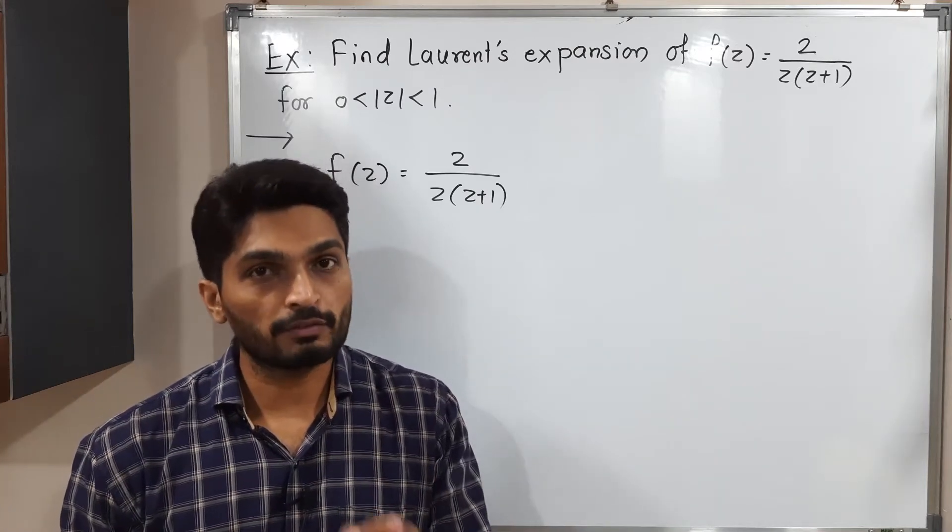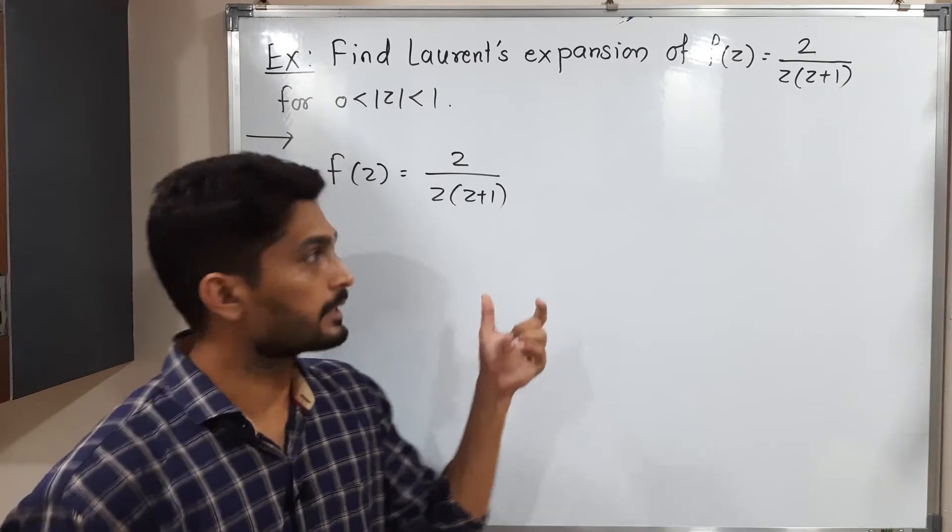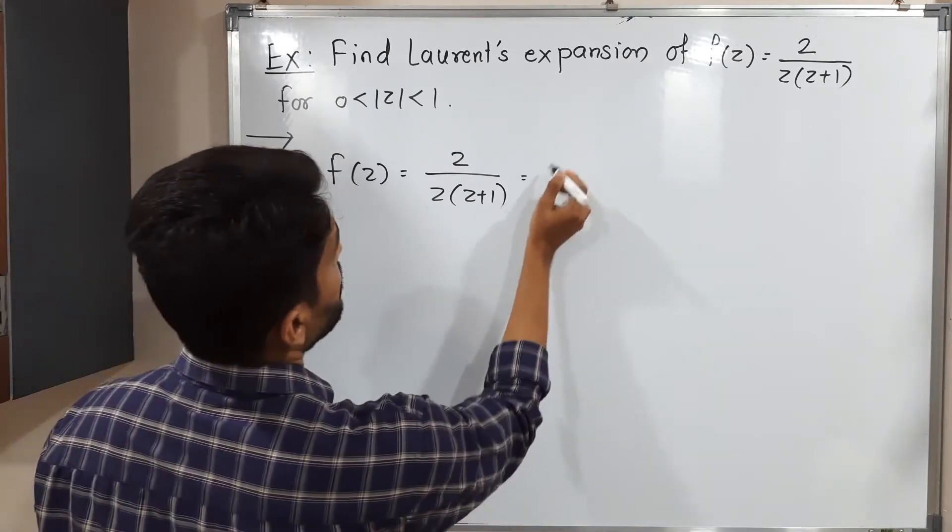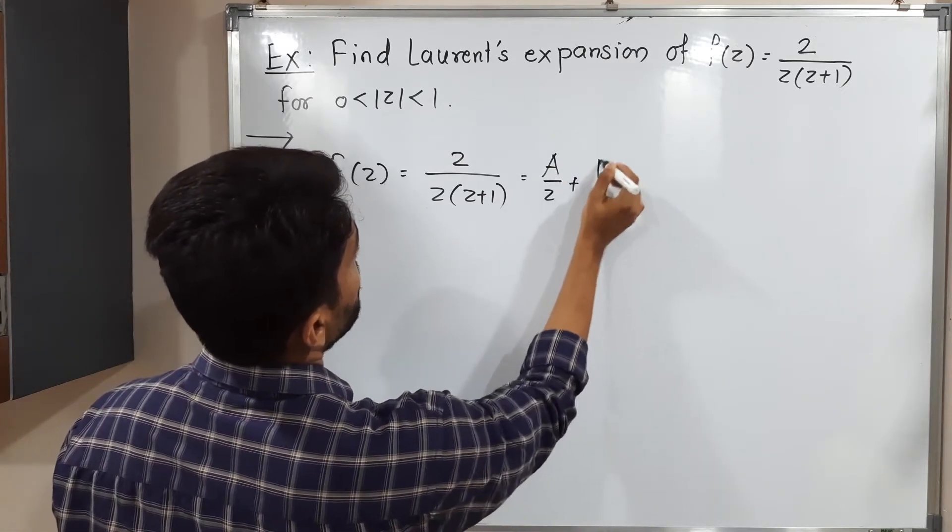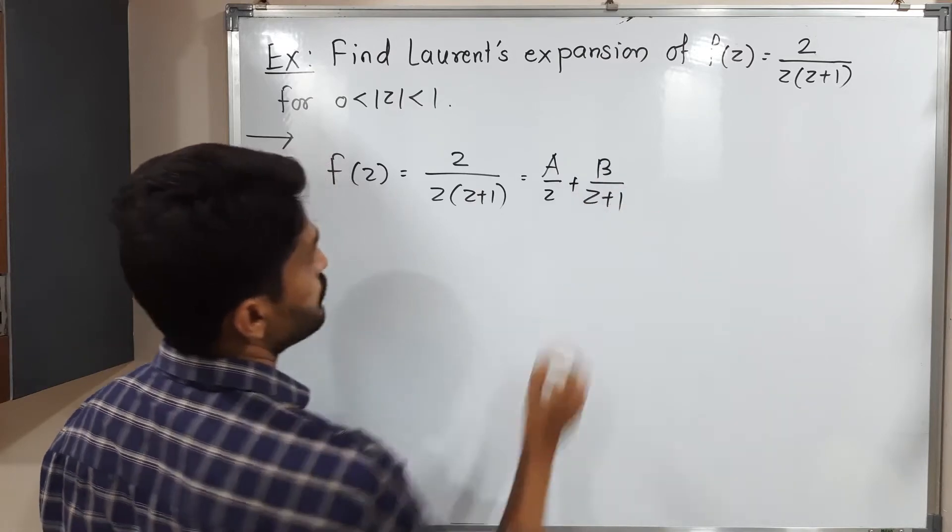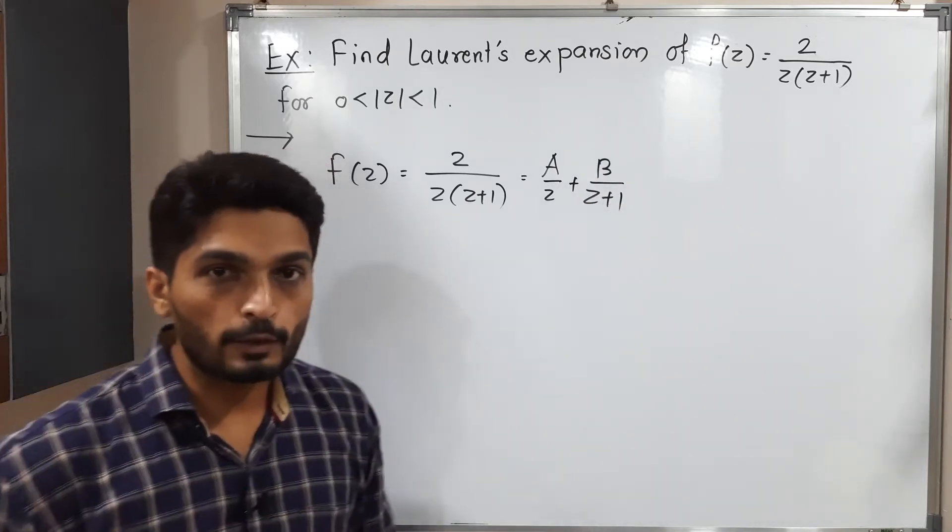We are going to use partial fractions to make this denominator separate. I am going to consider A upon z plus B upon z plus 1. Our target is to find values of A and B.